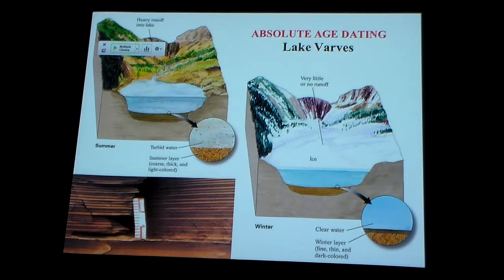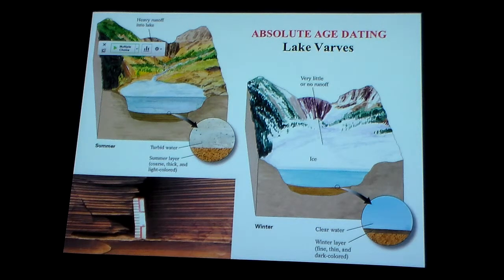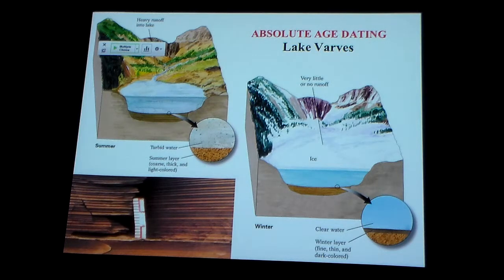But you have to be careful how you use these. This is something called a varve. When it accumulates in these glacial lakes, they're called varves. Other times they're just called rhythmites or couplets, depending on whether you know whether they're glacial or not.